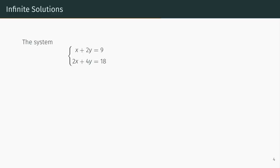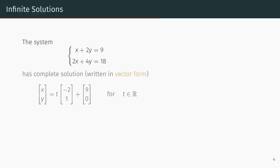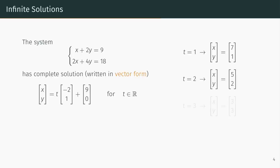This means we know how to write the complete solution to the original system. Formally, we would write x plus 2y equals 9 and 2x plus 4y equals 18 has complete solution xy equals t times minus 2, 1 plus 9, 0 for t in R. We call this the complete solution because every real number you plug in for t produces a solution, and every solution can be obtained by plugging in some real number for t.